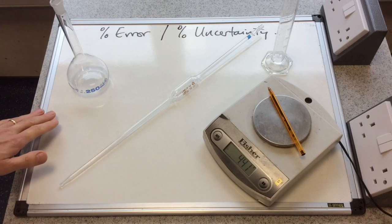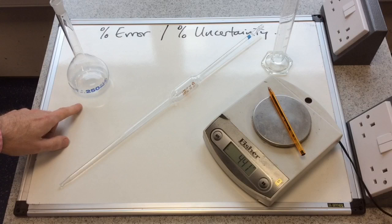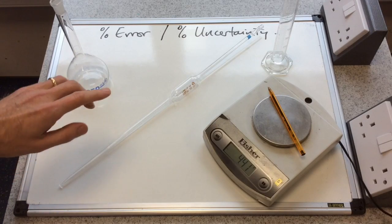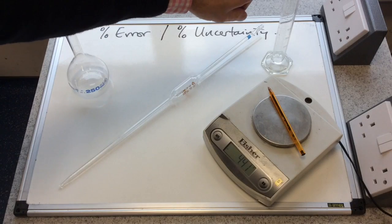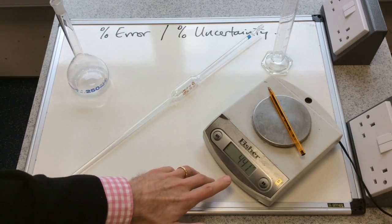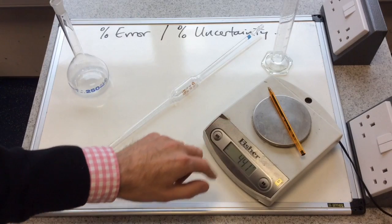So I've got some examples on the board here. I've got a 250 milliliter volumetric flask, a 25 milliliter pipette, a 50 milliliter measuring cylinder, and I've got a 2 decimal place electronic balance, which as you can see has got my biro on it.